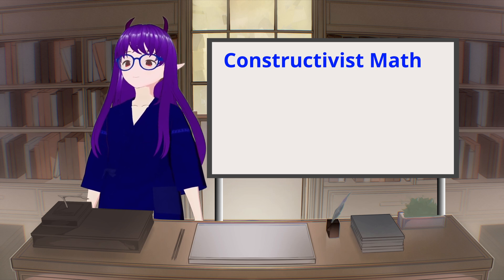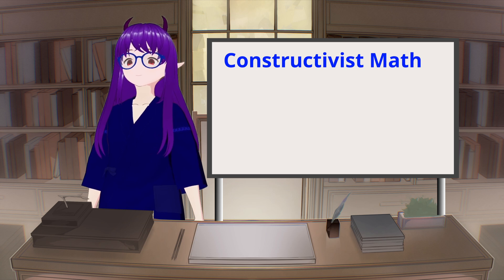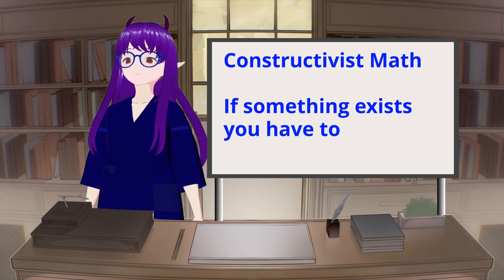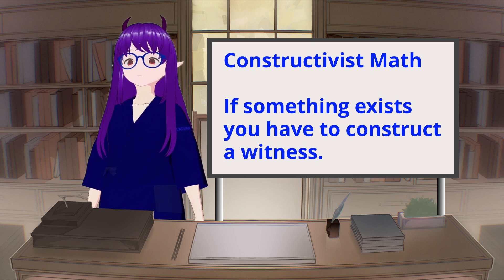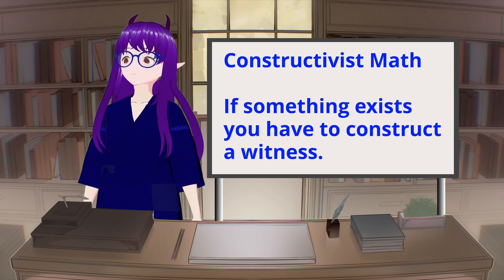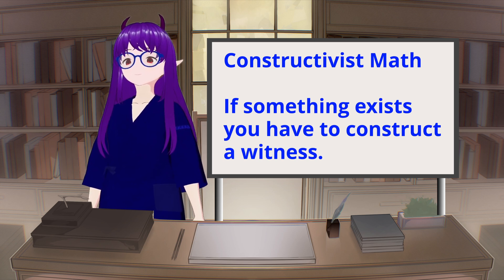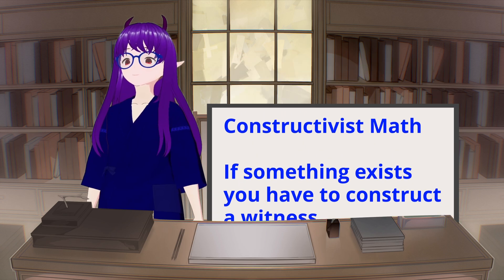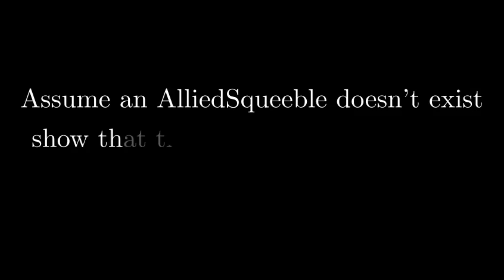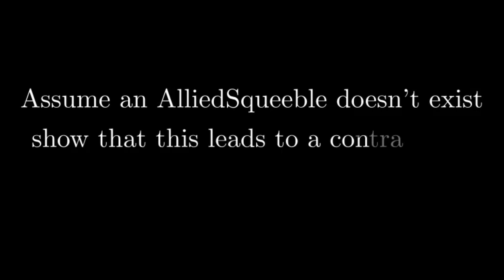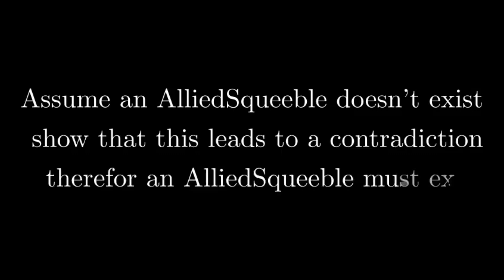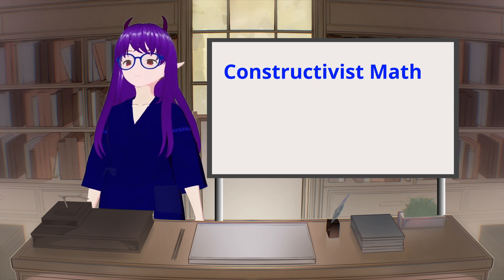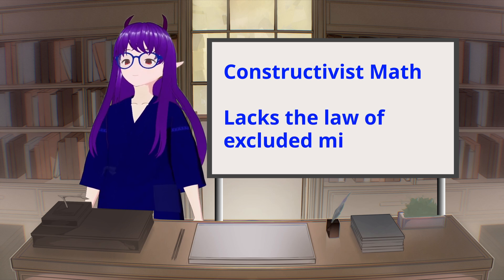The most popular alternative to classical ZFC is called constructivist mathematics. The goal of constructivist mathematics is that whenever you want to prove that something exists, you have to be able to construct it. That constructed thing is called a witness, because like a witness it stands as evidence of the proof. To prove an alley squeeble exists you would have to show how to create one, whereas in classical mathematics you could do an indirect proof — showing that assuming alley squeebles don't exist leads to an impossible condition.